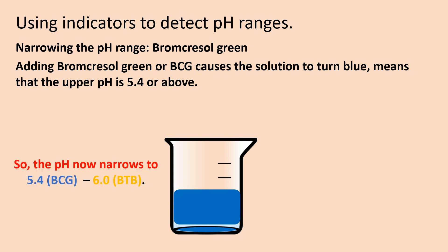So the pH now narrows to 5.4 to 6.0, where 5.4 is the upper range for BCG and 6.0 is the lower range for BTB or bromthymol blue. We now know the pH within 0.6 pH units.